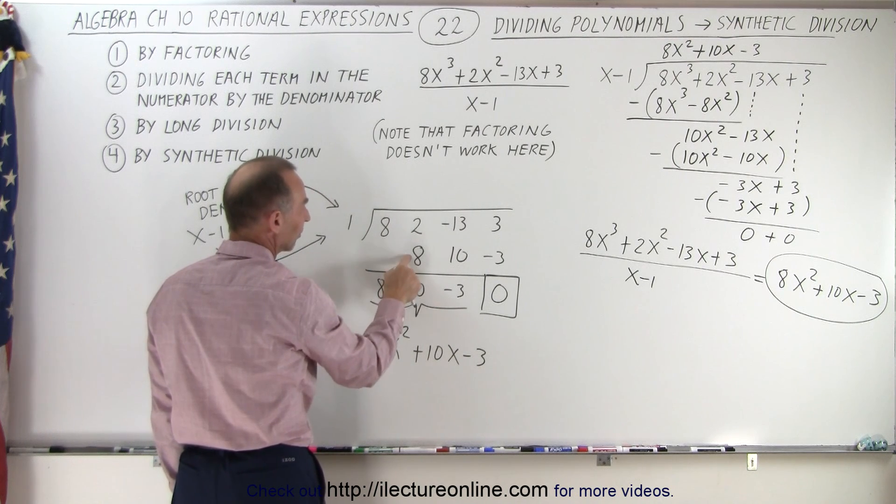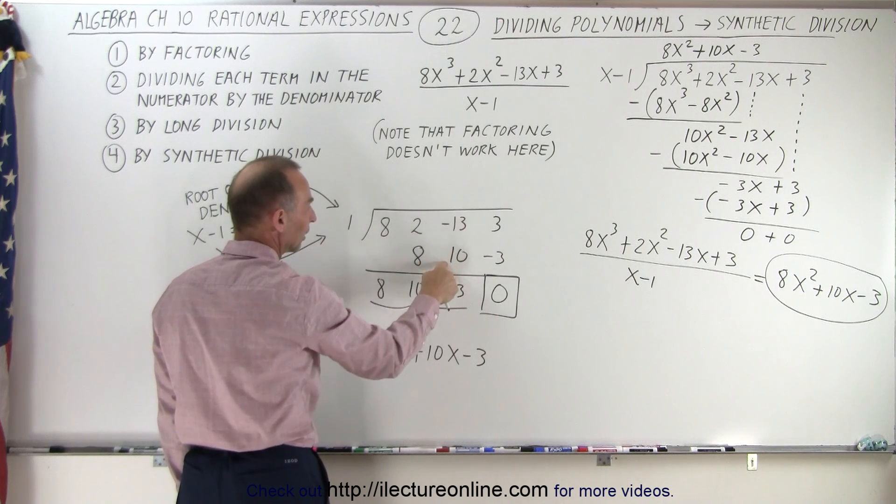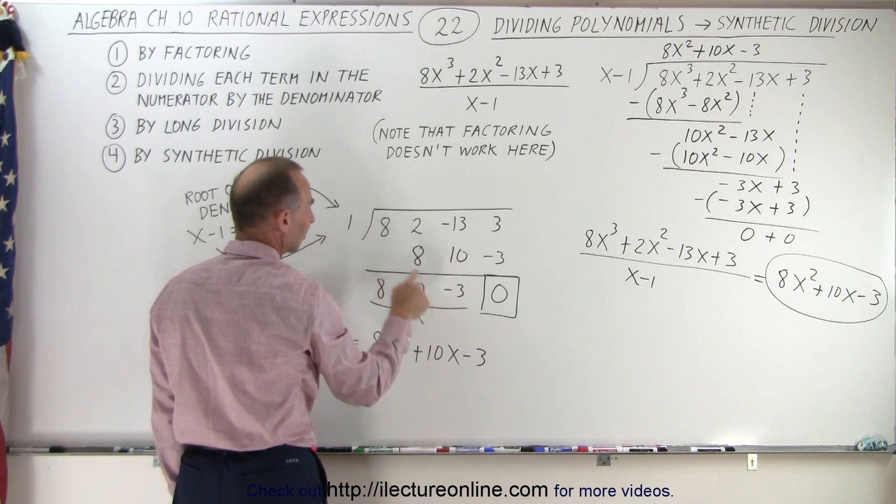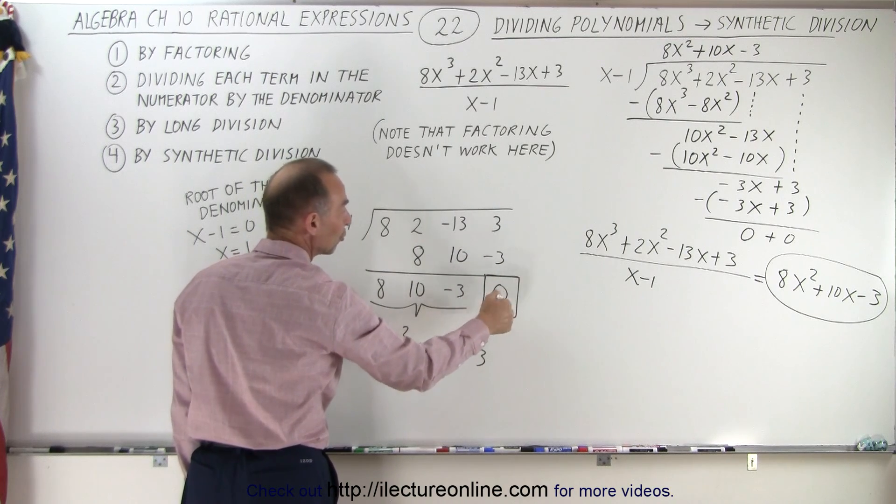1 times 8 gives us 8, we add the two together, gets us 10, 1 times 10 is 10, add the two together we get negative 3, 1 times negative 3 is negative 3, add them together we get 0, which means there's no remainder.